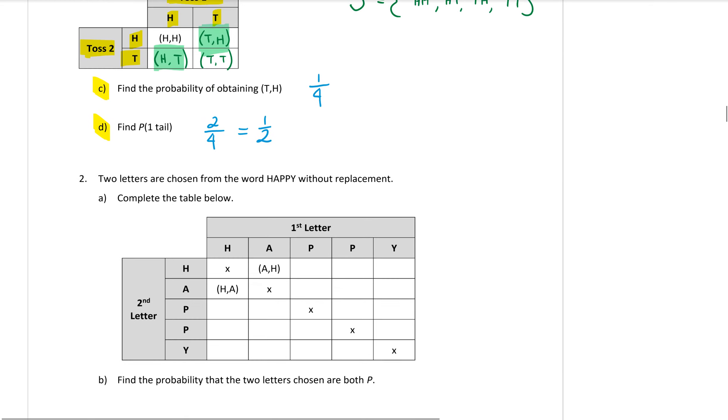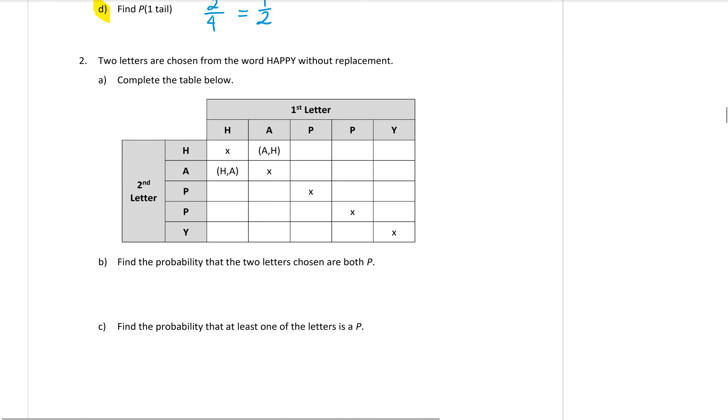Okay, so that's the end of our first question. We have another one here. Question two. Two letters are chosen from the word HAPPY without replacement. Now that without replacement means if I choose an H in my first selection, that H has been removed and I can't choose it for my second letter.